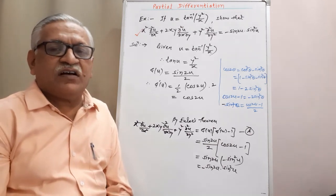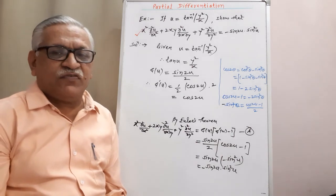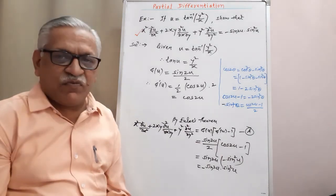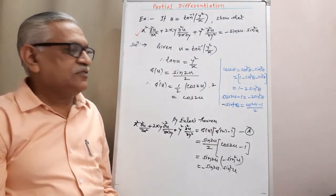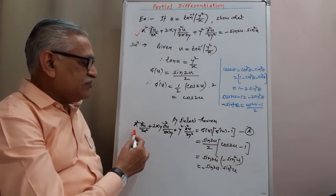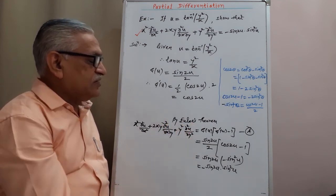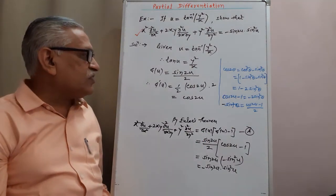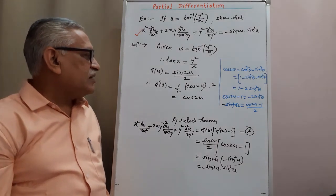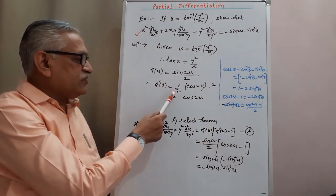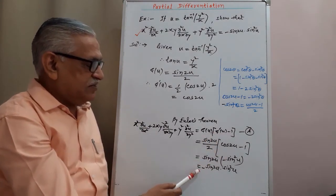This is a problem of Euler's theorem for homogeneous functions. There are two types: Type 1, if it is simply a function of x and y; and Type 2, if it is a function of a function like this. For Type 2, Euler's theorem states: x²∂²u/∂x² + 2xy ∂²u/∂x∂y + y²∂²u/∂y² = g(u)·[g'(u) − 1], where g(u) = n·f(u)/f'(u). Differentiating gives g'(u), substituting and simplifying gives the required result.